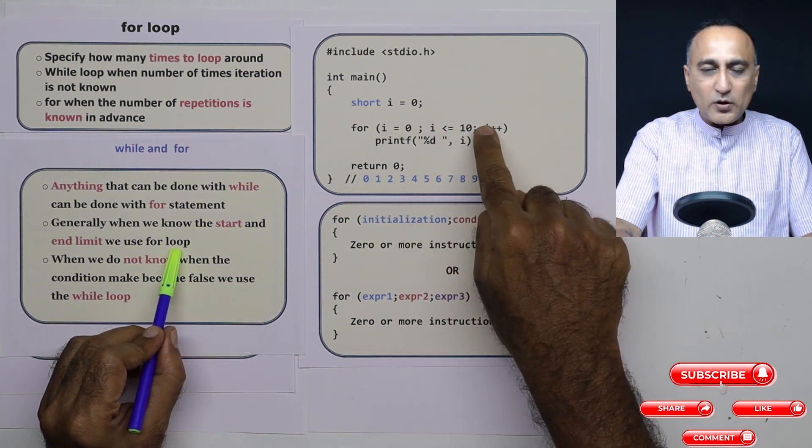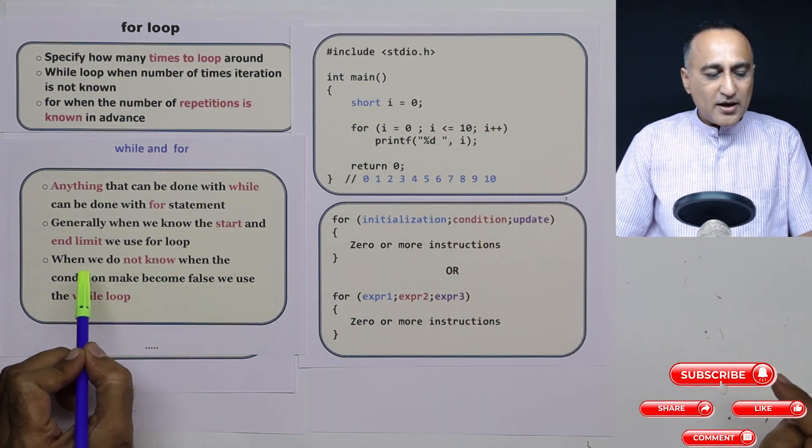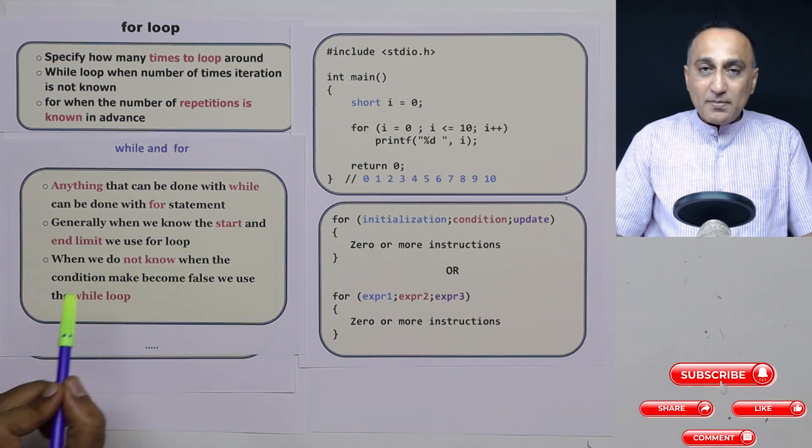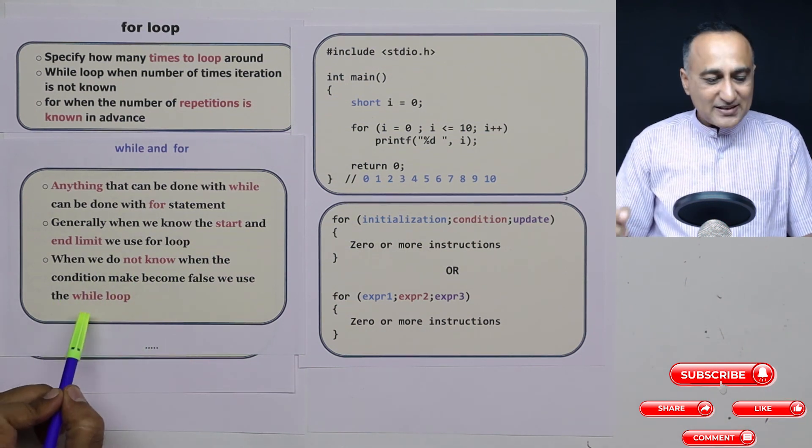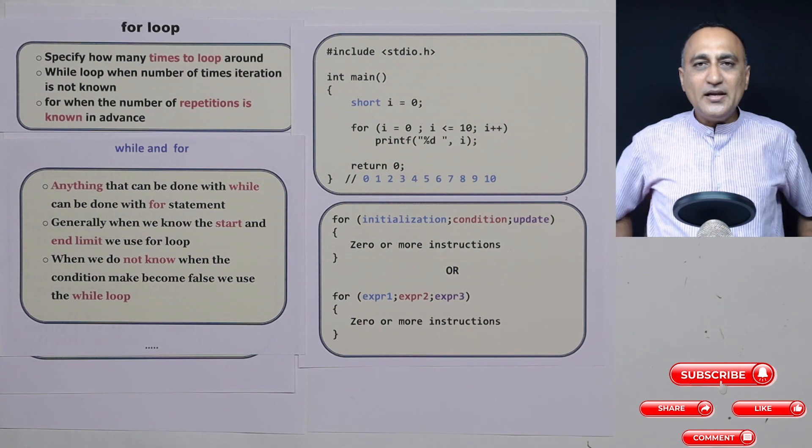Generally, when we know the beginning value and the end limit, we use the for loop, as I told you by printing one to ten thousand, and so on. But when I do not know when my condition is going to become false, that's when I generally use the while loop.